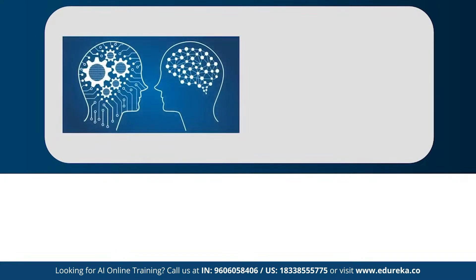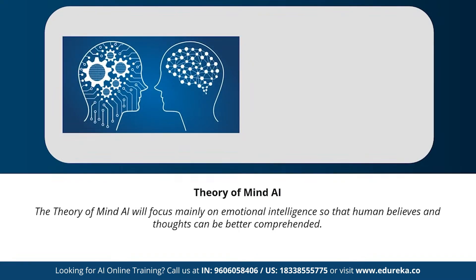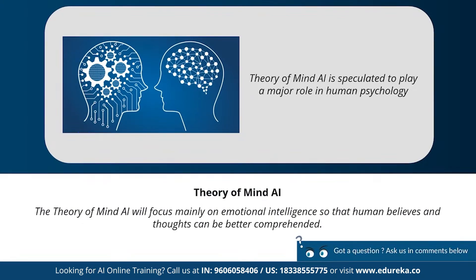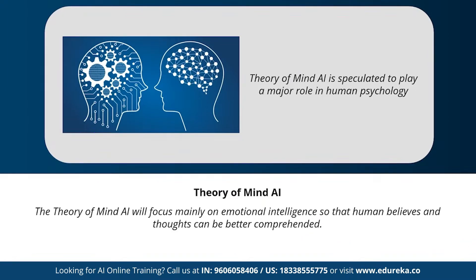Next we have theory of mind artificial intelligence. Theory of mind AI is a more advanced type of AI, speculated to play a very important role in psychology. This type of AI will mainly focus on emotional intelligence so that human beliefs and thoughts can be better comprehended. Theory of mind AI has not been fully developed yet, but rigorous research is happening in this area.